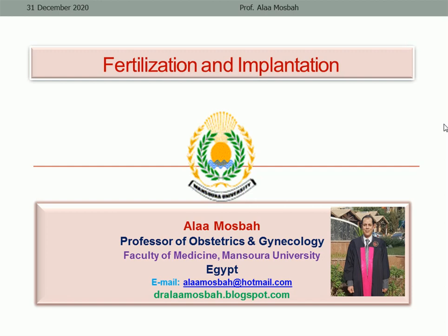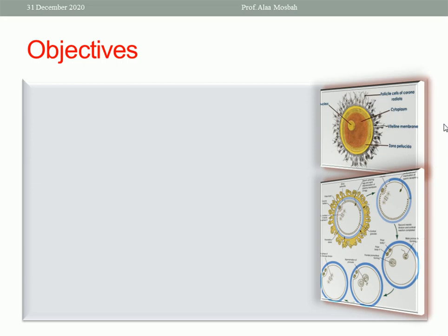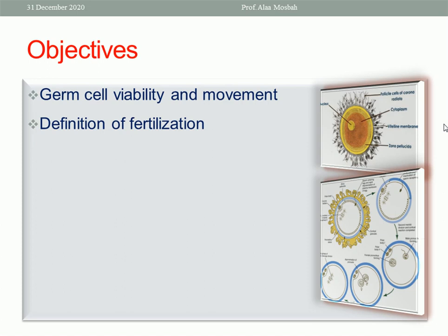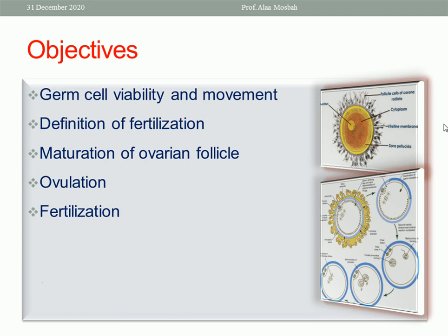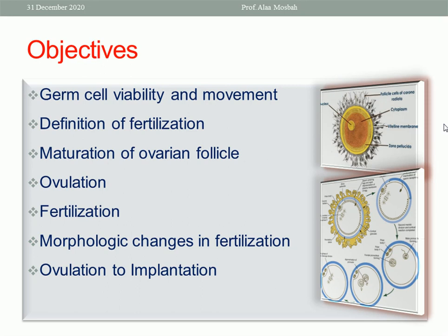Today we will discuss germ cell viability and movement, how sperm pass through the genital tract through the cervix, the uterus, and the fallopian tube to reach the ovum and achieve fertilization. We will also cover the definition of fertilization, maturation of the ovarian follicle, ovulation, morphologic changes in fertilization, the journey from ovulation to implantation, and lastly implantation itself.